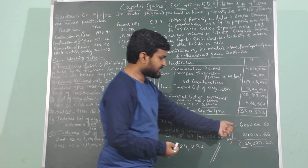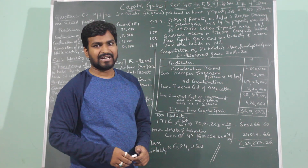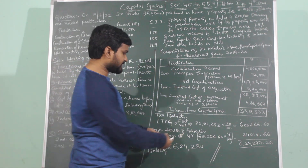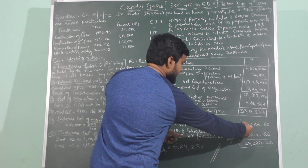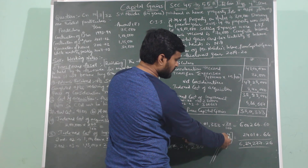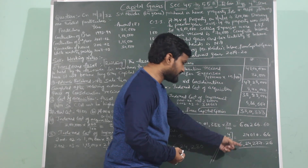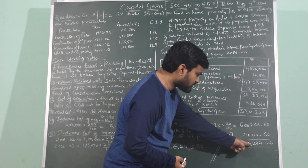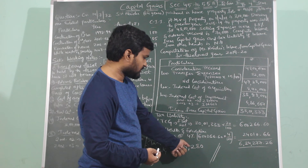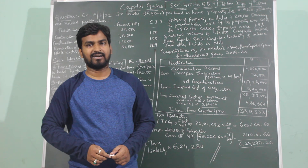Rs. 30 lakhs 1,333 × 20 ÷ 100 = Rs. 6 lakhs 266.60. This should be added with surcharge if applicable, and health and education cess taxed at 4%. The 4% cess is calculated on income tax: Rs. 6 lakhs 266.60 × 4 ÷ 100 = Rs. 24,010.66 paisa. Total tax liability: Rs. 6 lakhs 266.60 + Rs. 24,010.66 = Rs. 6 lakhs 24,277.26, rounded off to nearest 10 rupees = Rs. 6 lakhs 24,280.